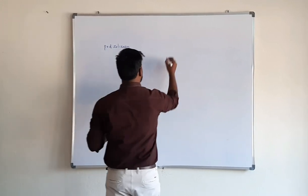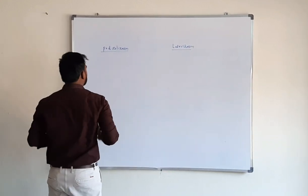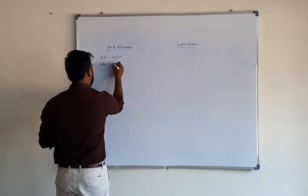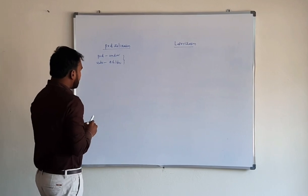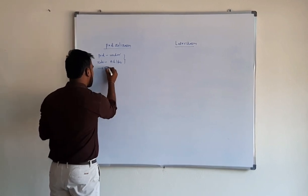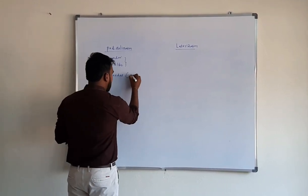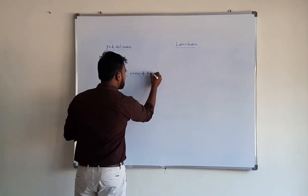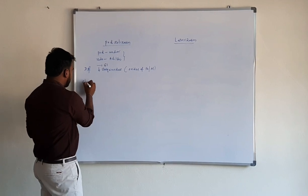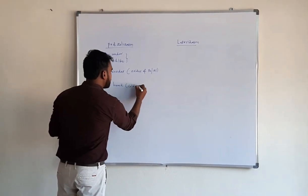Now discussing the third specific zonal pedogenic process: podzolization. In Russian, 'pod' means under and 'zola' means ash. Podzolization is nothing but accumulation of silica and removal of sesquioxides. Sesquioxides are oxides of iron and aluminum. The climatic condition for podzolization is cool and humid, meaning cold and humid climatic conditions.